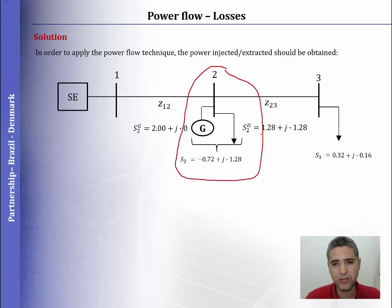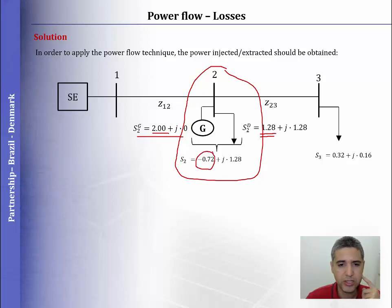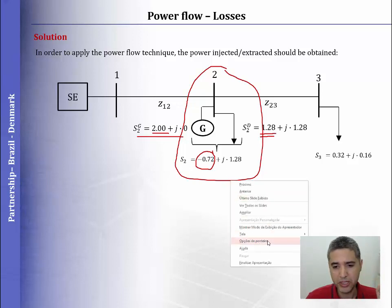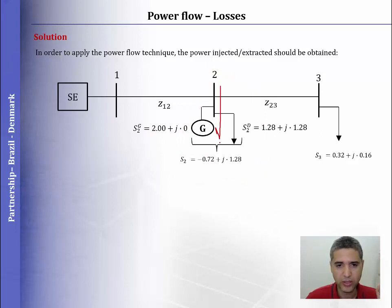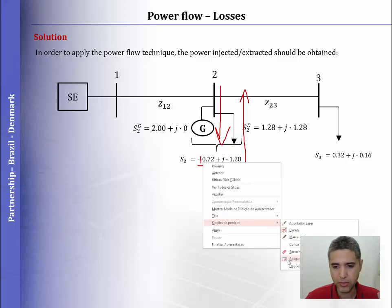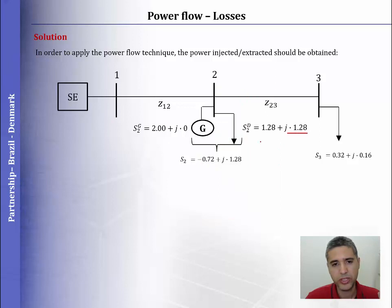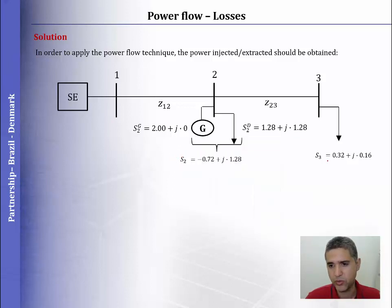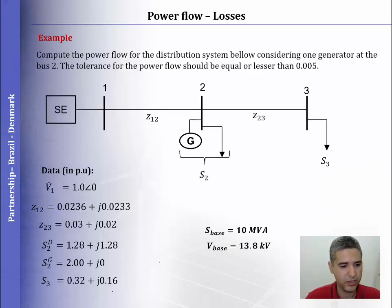For bus 2, we compute the net value by subtracting the load from the generation: 1.28 minus 2, and the result is minus 0.72. It means that we have an extraction of minus 0.72, or in other words, an injection of 0.72. And 1.28 minus 0 is 1.28, so we have this net value for bus 2. For bus 3, this is the same value as the data.